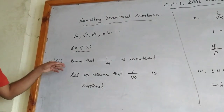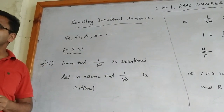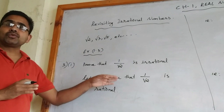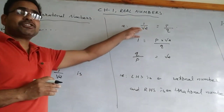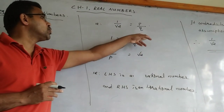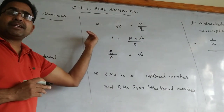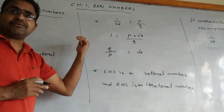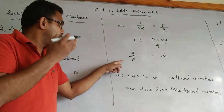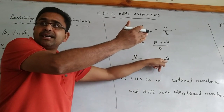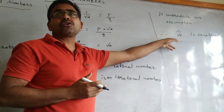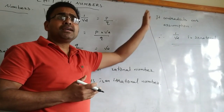Question 3, first part: prove that 1/√2 is irrational. Same procedure. Let us assume that 1/√2 is rational, so 1/√2 = P/Q. Rearranging: 1 = (P/Q) × √2, so √2 = Q/P. Now Q/P is also in the form of a rational number, meaning LHS √2 would be rational — but we know √2 is an irrational number. This contradicts our assumption. Hence we can prove that 1/√2 is an irrational number.